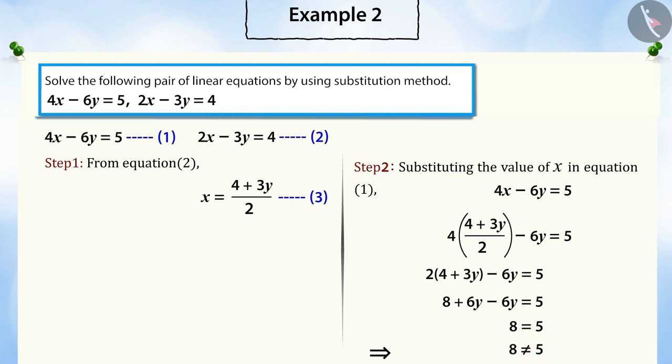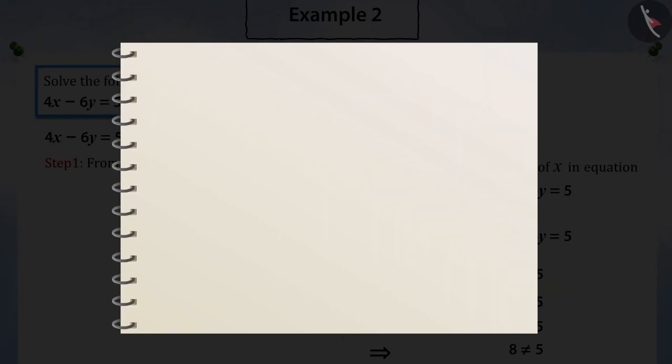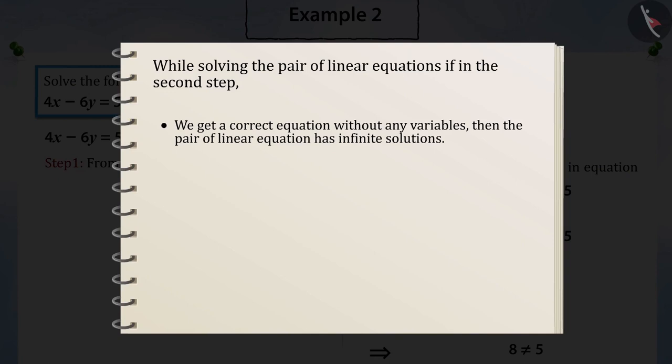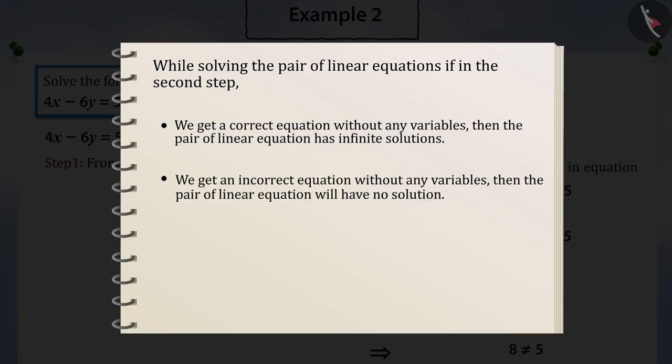Can you tell me what it means? While solving the pair of linear equations in step 2, if we get a correct equation without any variable, then there will be infinite solutions to the pair of linear equations. And if we get an incorrect equation without any variable, then there will be no solution to the pair of linear equations.